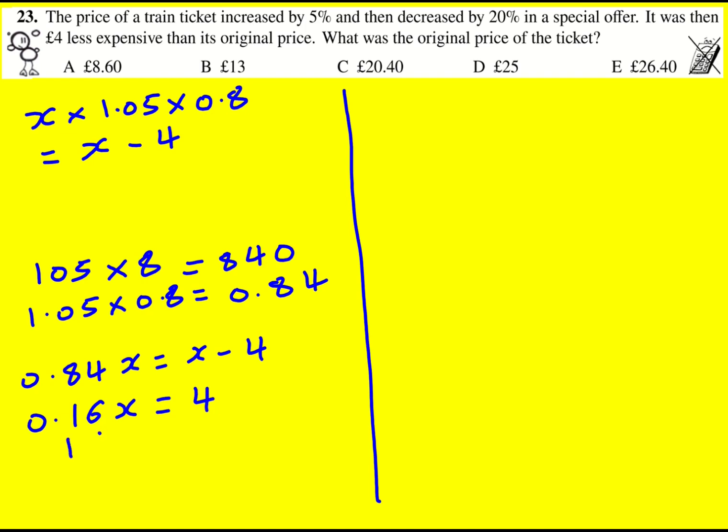So I'm going to times through by 100. 16x is going to equal 400. And divide by 4. I'm just going to do it step by step. 4x is equal to 100. So I can see that x is equal to 25.